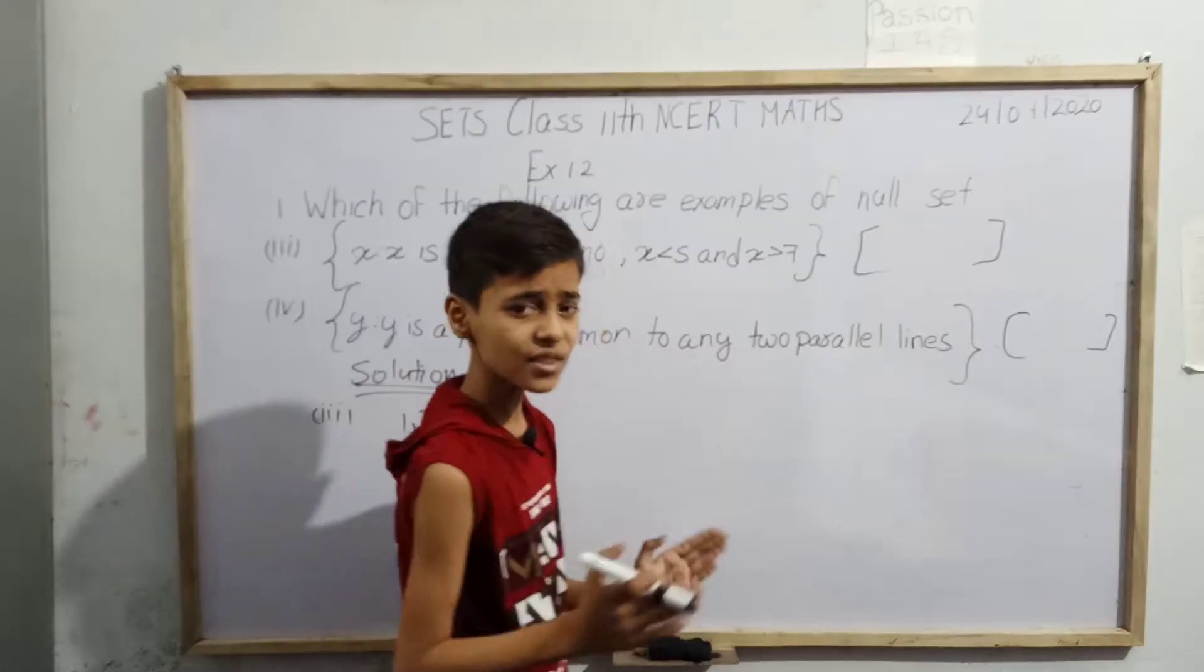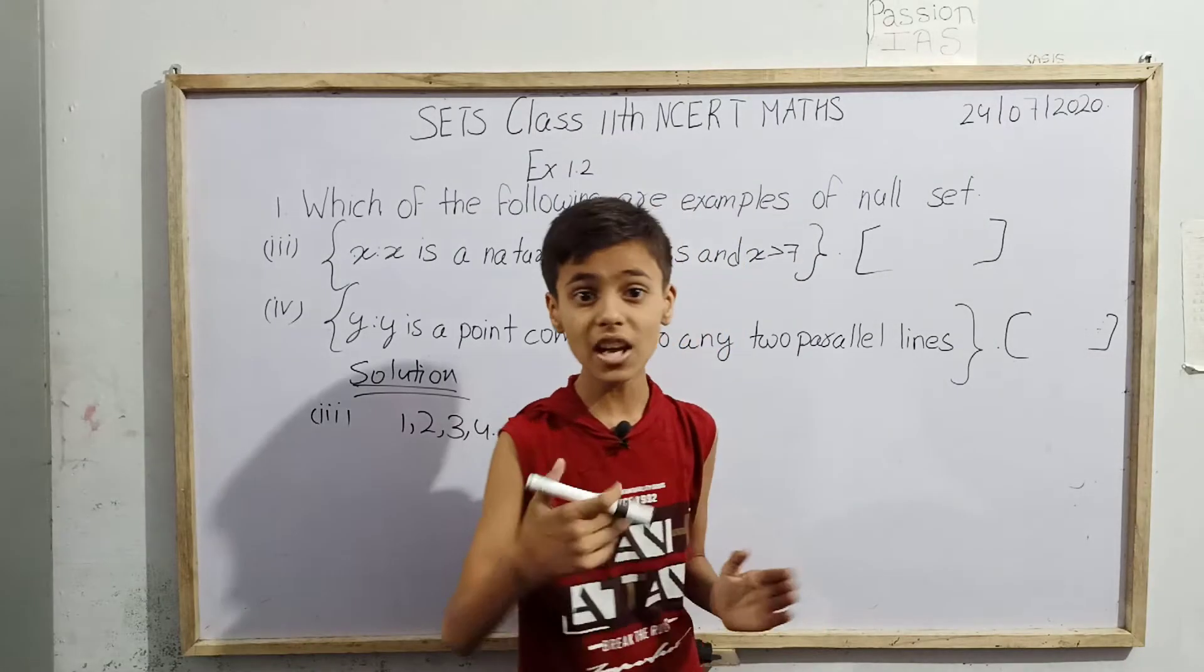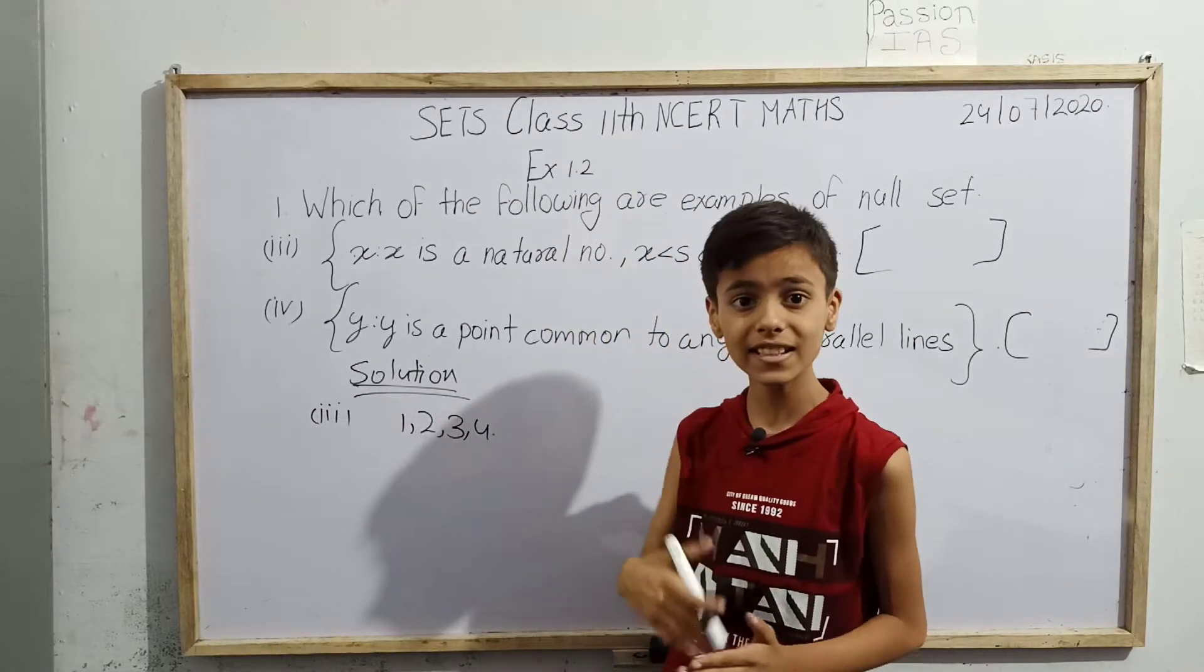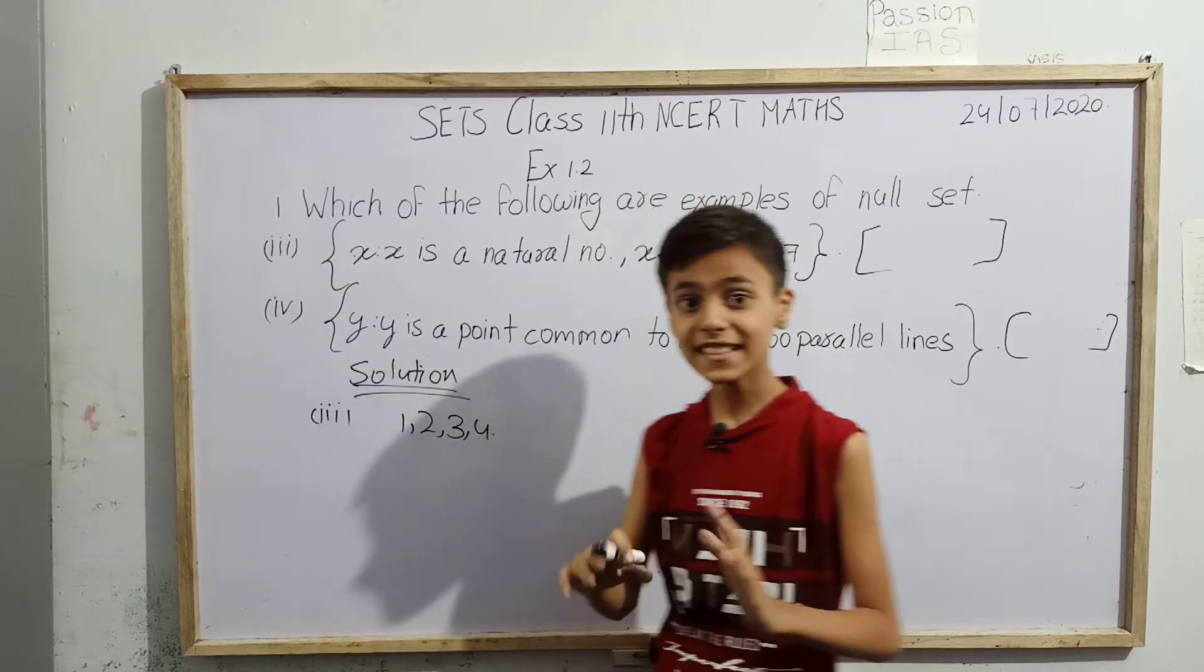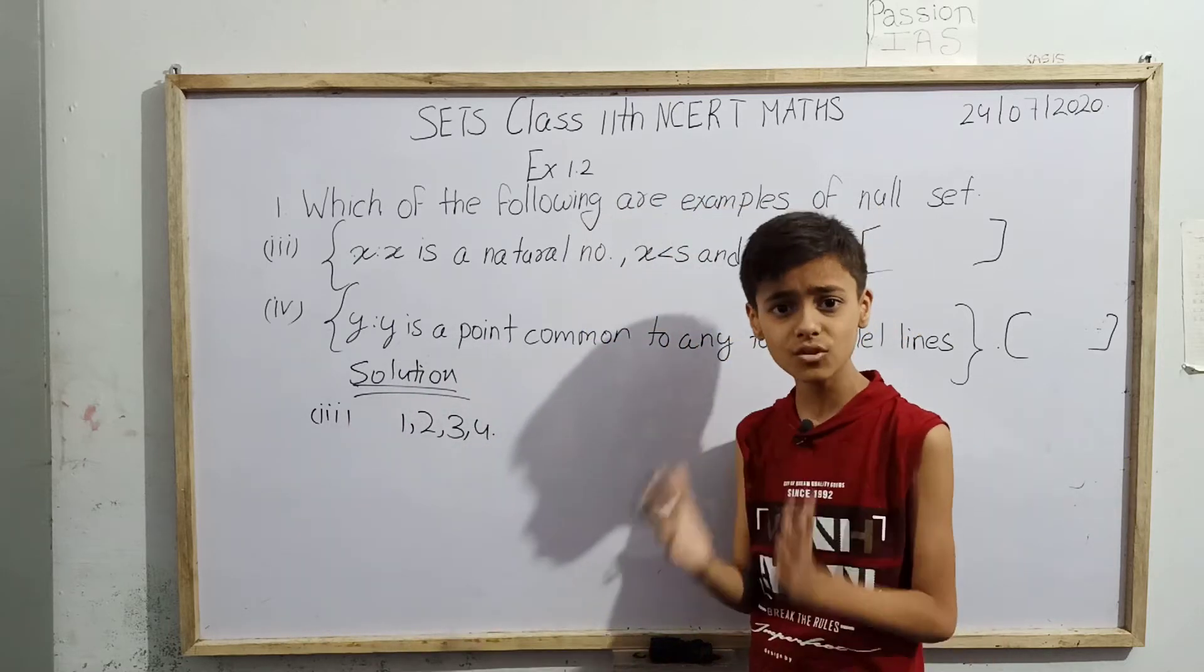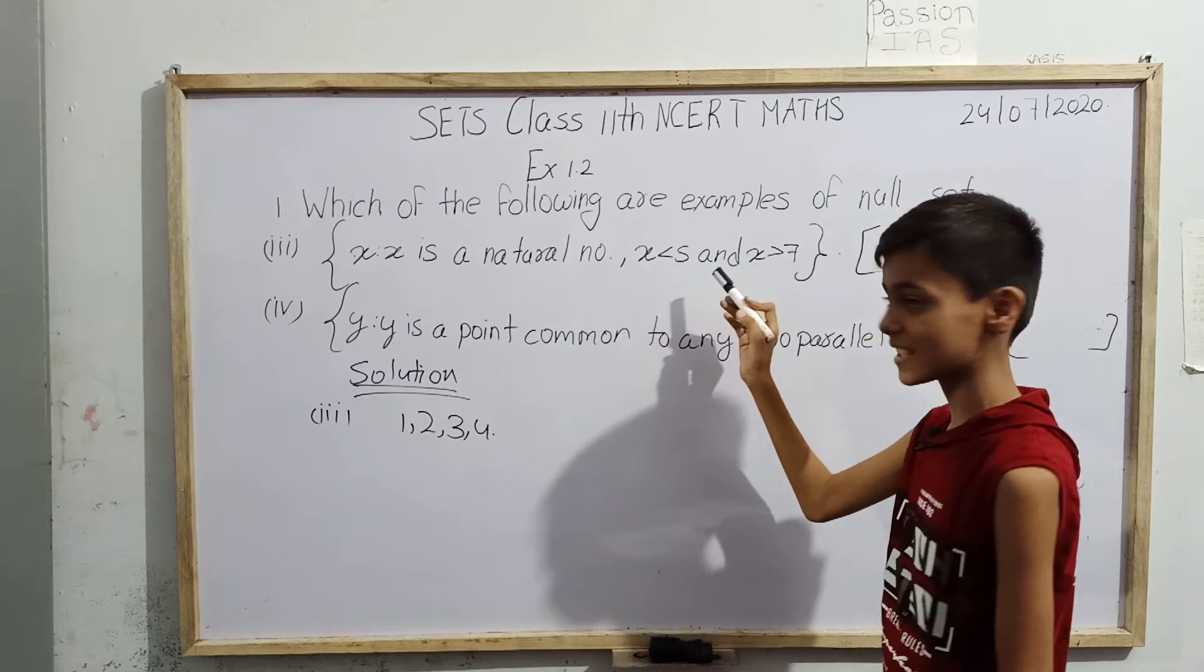None is greater than 7. How can there exist a set of such natural numbers in which all elements are less than 5 and they are also greater than 7? It means there exists no such element.